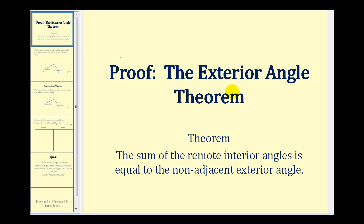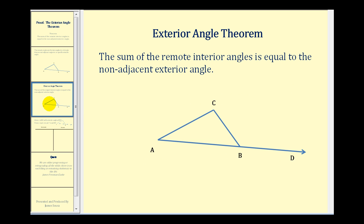Welcome to a proof of the exterior angle theorem. The exterior angle theorem states that the sum of the remote interior angles is equal to the non-adjacent exterior angle.